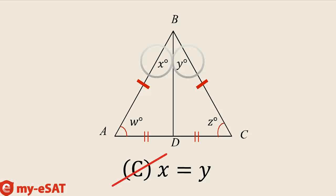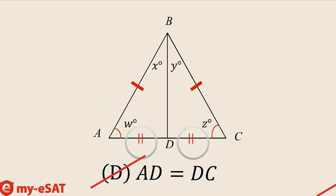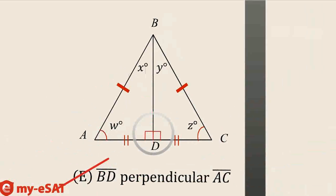Eliminate answer choice C. D says AD equals DC — that's already marked on our diagram, so cross that off. Lastly, BD is perpendicular to AC. If you look at our picture, BD looks perpendicular to AC. X equals Y and W equals Z, so the remaining two angles must equal each other as well. Since they form a straight line, they must both be 90 degrees, making line BD definitely perpendicular to AC. Also, this picture doesn't have a note saying 'diagram not drawn to scale,' so you can trust it. Eliminate answer choice E — leaving us with the only answer we cannot conclude: answer choice A.